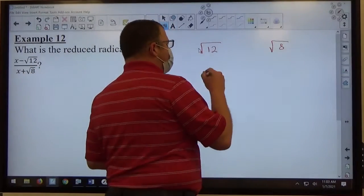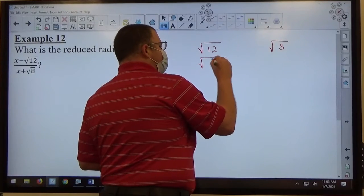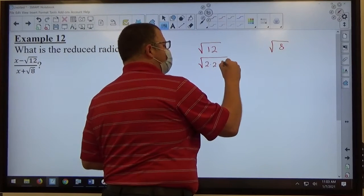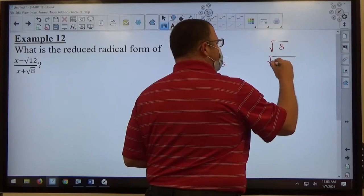50 is another one that comes up quite often. The square root of 12, 12 is 2 times 2 times 3, and 8 is 2 times 2 times 2.